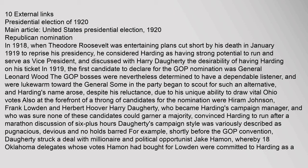In the 1920 presidential election's Republican nomination process, in 1918, when Theodore Roosevelt was entertaining plans — cut short by his death in January 1919 — to reprise his presidency, he considered Harding as having strong potential to run and serve as Vice President, and discussed with Harry Doherty the desirability of having Harding on his ticket in 1919.